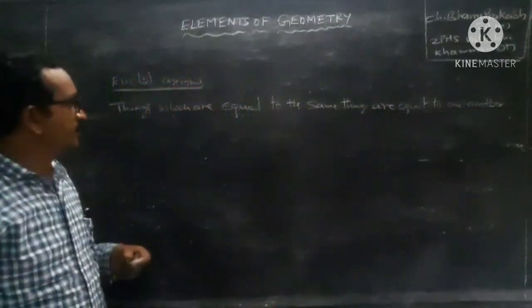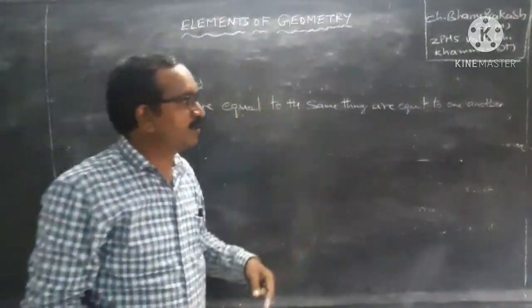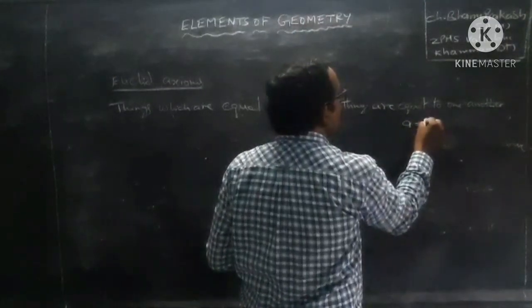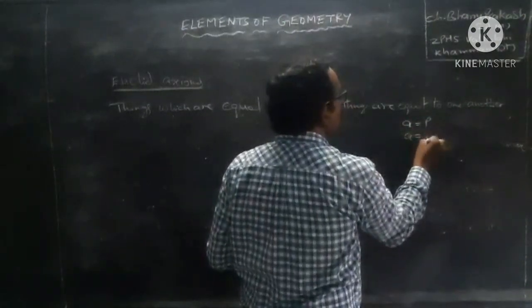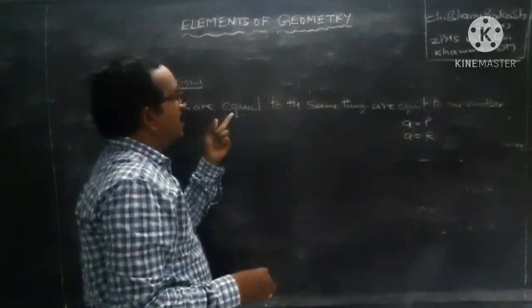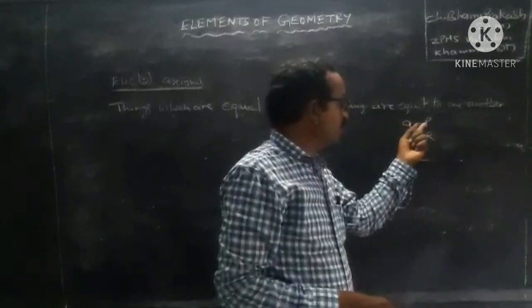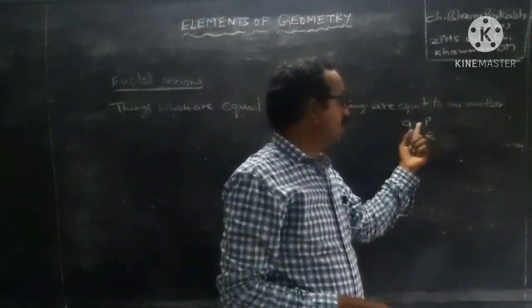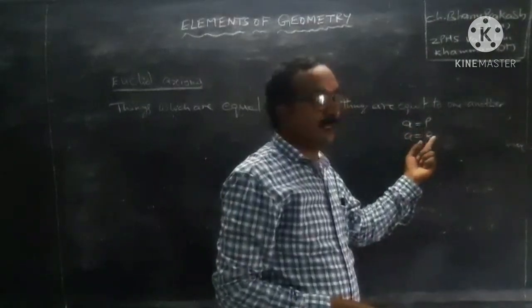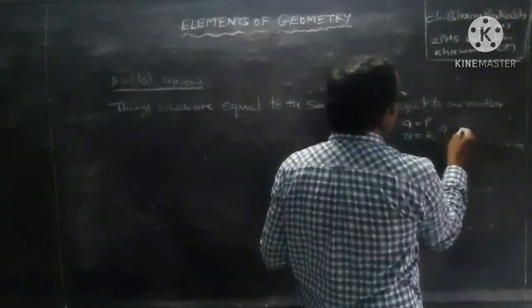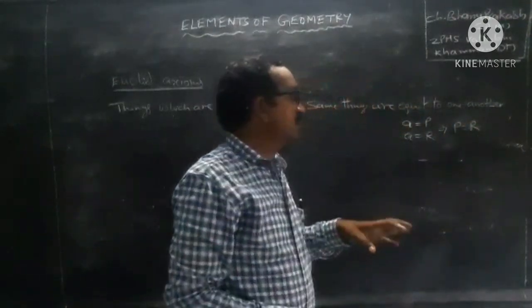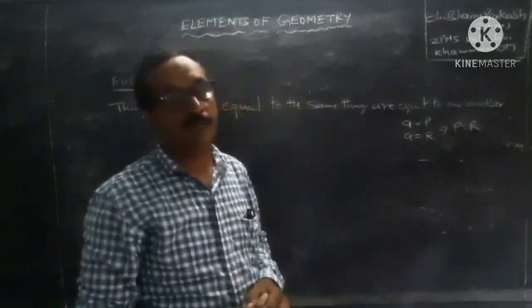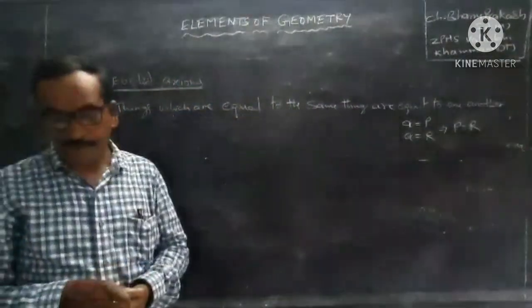That means: if A equals P and A equals R, then P and R — the things which are equal to the same thing — implies P equals R. The things which are equal to the same thing are equal to each other. That is the first axiom of Euclid.